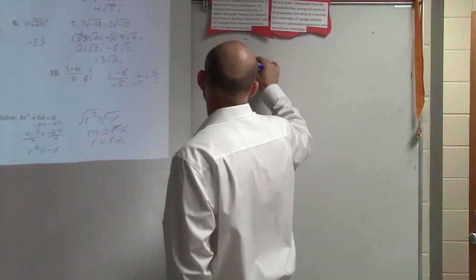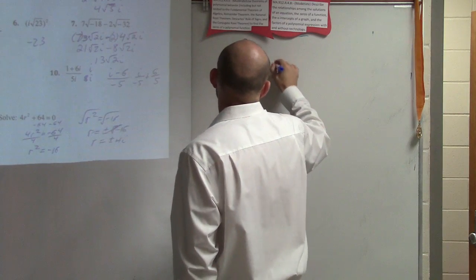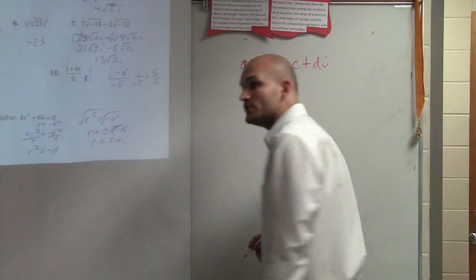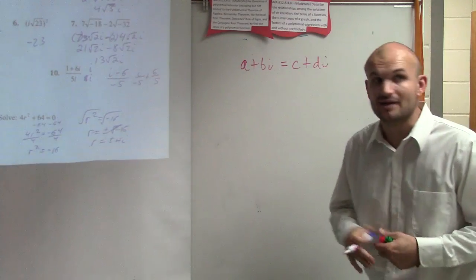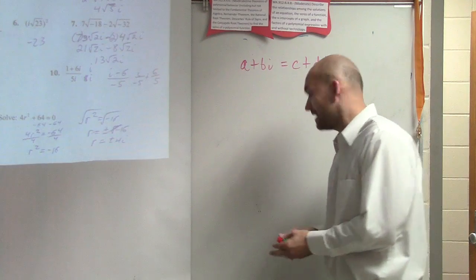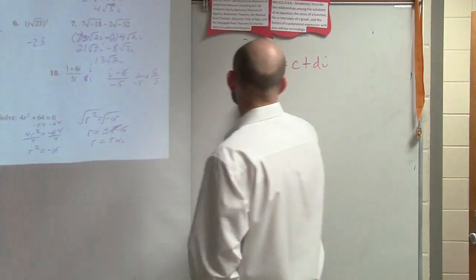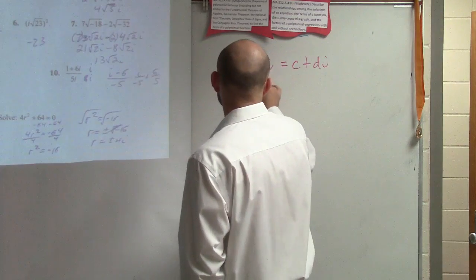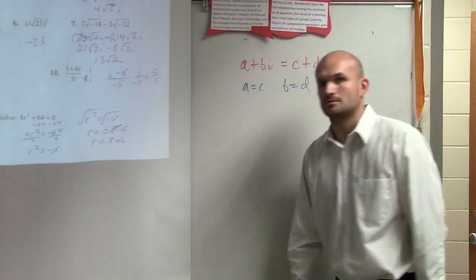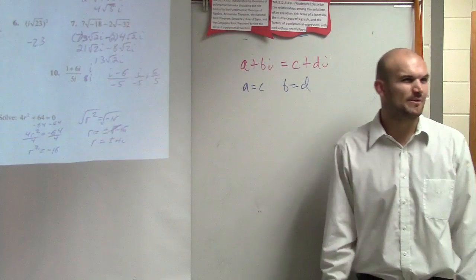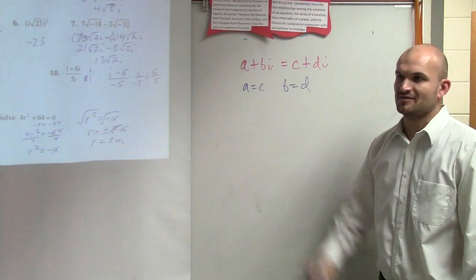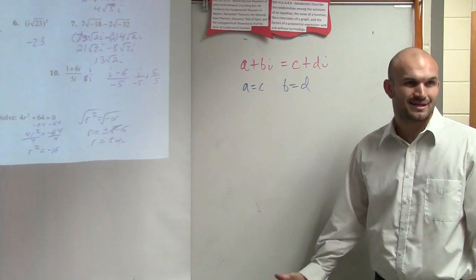The equality of complex numbers states that if you have A plus B i equal to C plus D i, the only way for complex numbers to be equal to each other is if A equals C and B equals D. Because i represents your imaginary part, so your real numbers have to be equal.